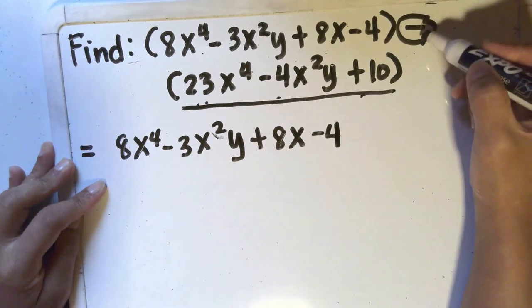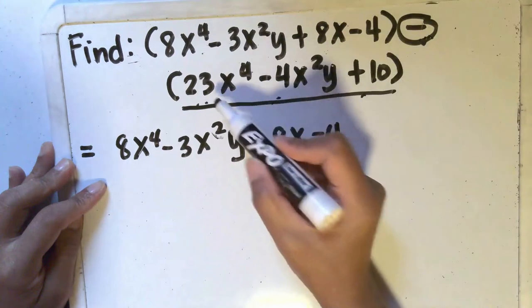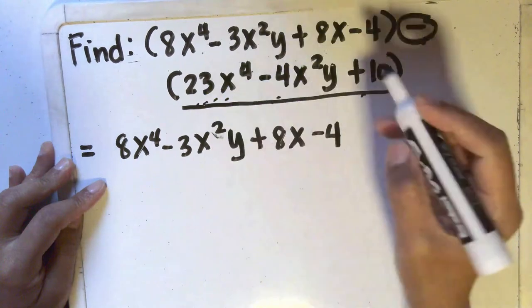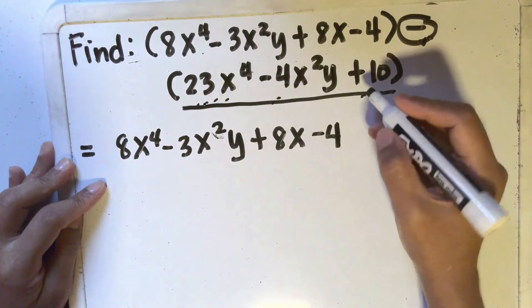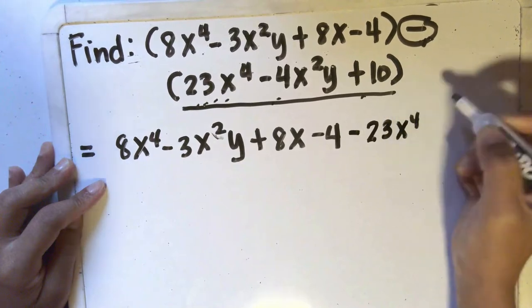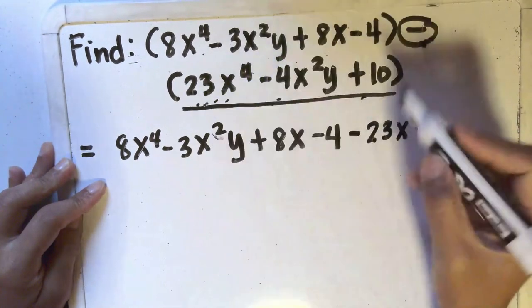Now remember, you're subtracting not just the first term here but this entire expression. So you'll be minus positive 23x to the 4th. So that will be minus 23x to the 4th. Negative times positive is negative.